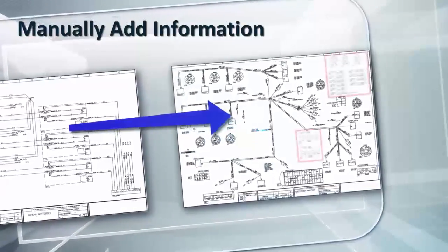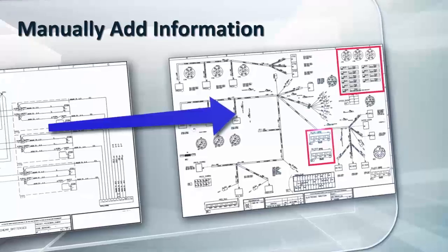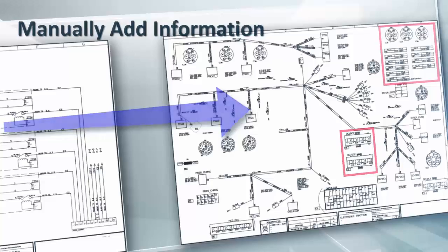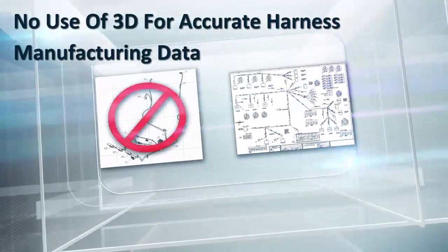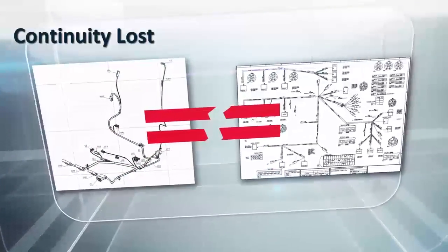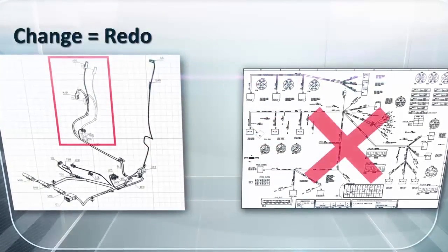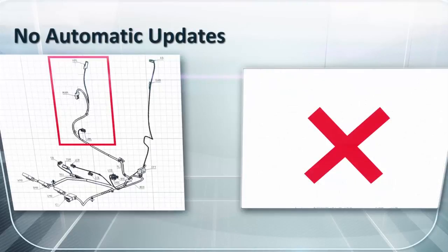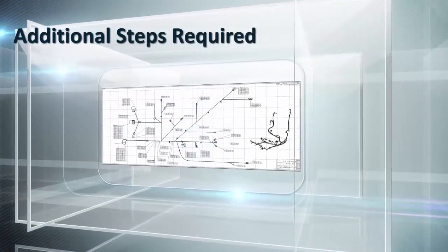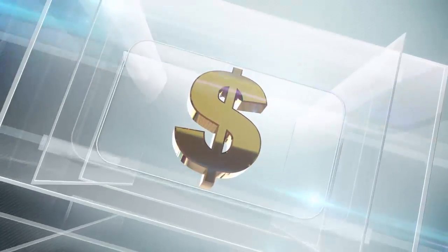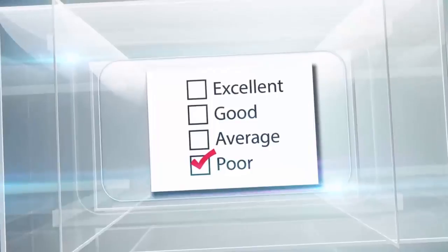A lot of information has to be added manually to complete the manufacturing documentation. A physical mock-up is needed with a negative impact on cost, schedule, and quality. There's no use of the 3D wire harness design to create accurate harness manufacturing data. The digital continuity is not maintained between the 3D harness design and manufacturing documentation. Whenever there's a change, everything has to be redone. There's also no automatic update of documentation when the 3D or 2D design changes. In short, it's very costly and time consuming, resulting in a lack of quality in the final product.